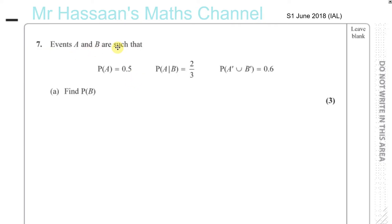Events A and B are such that the probability of A occurring is 0.5, the probability of A occurring given B is 2 thirds, and the probability of A complement union with B complement equals 0.6. We've got to use this information to find the probability of B.